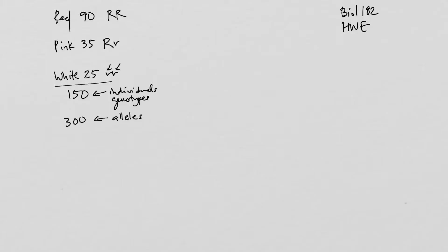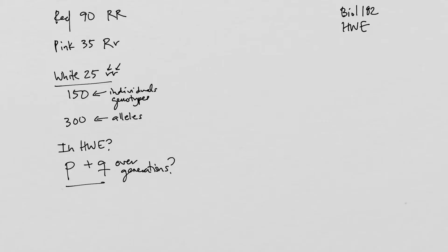What we want to ask is: is this population in Hardy-Weinberg Equilibrium? That is, does P and Q maintain from one generation to the next? We can do some math to figure out whether P and Q stay the same over the generations or if they're changing. So let's start by calculating P — the frequency of the dominant allele, the frequency of big R.